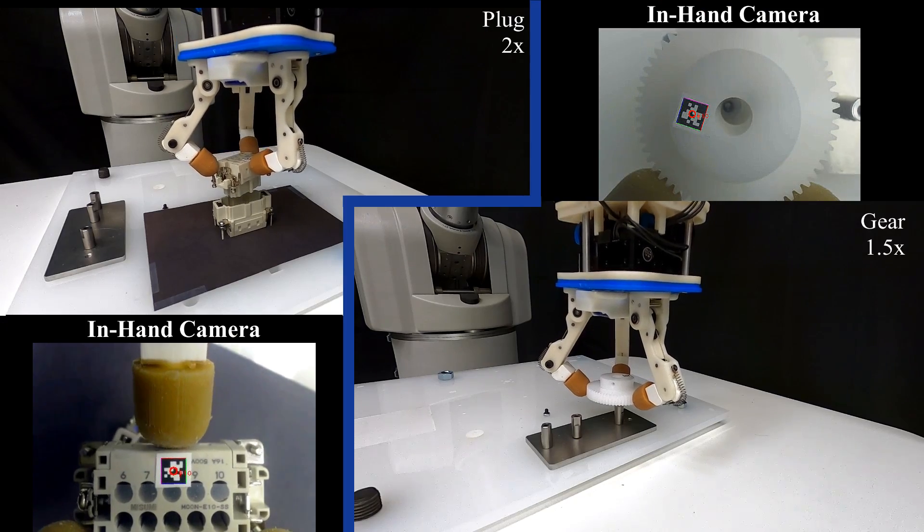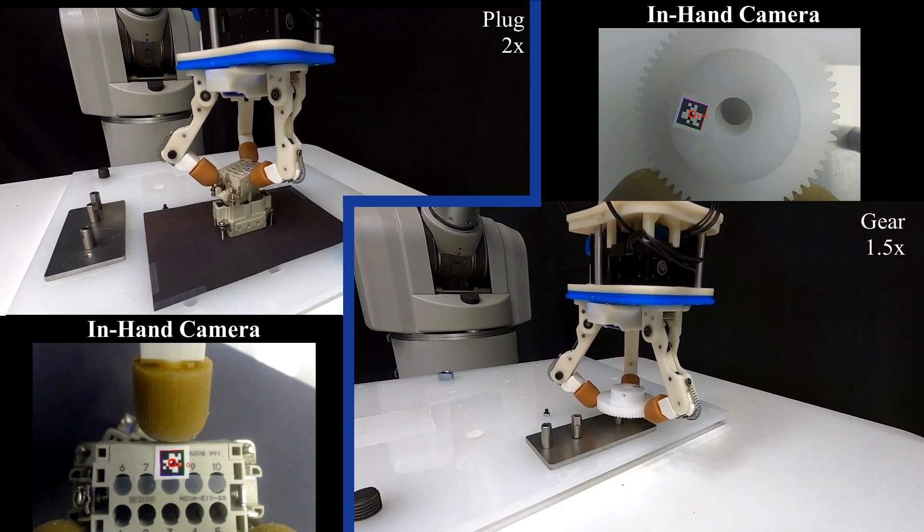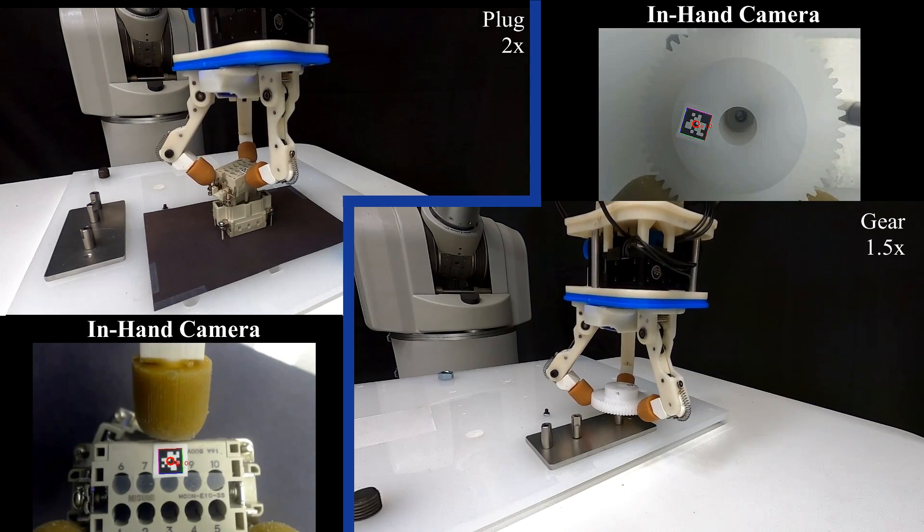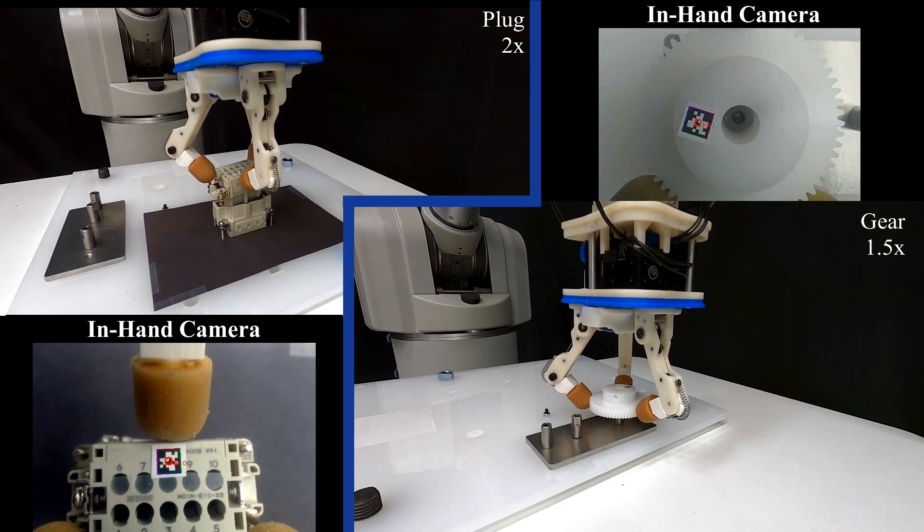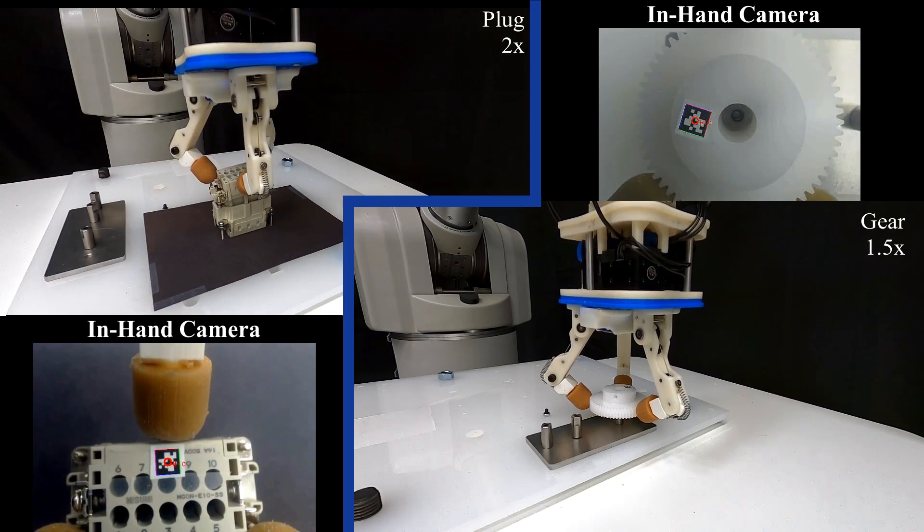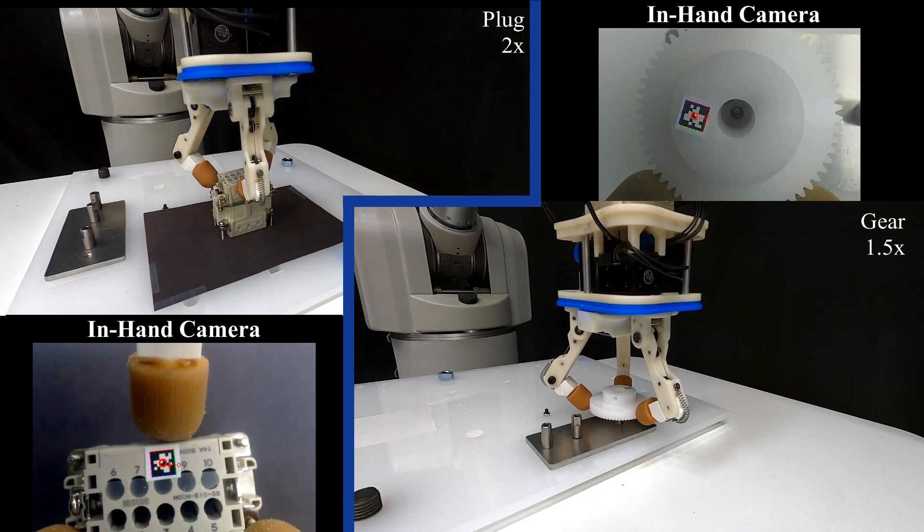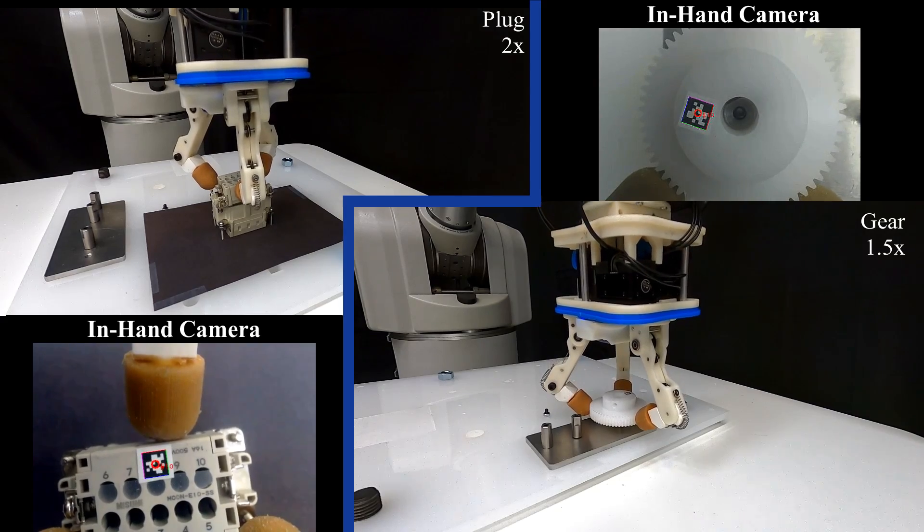Our method can also be extended to everyday objects included in the NIST assembly task board, particularly for gear and plug insertion. Note how during this process, the insertion sequence is identical to those previously presented, starting with exploration and moving through contact formations, underscoring the generalizability of our method.